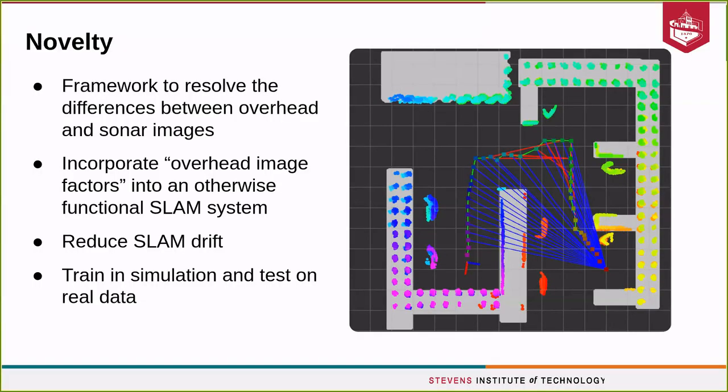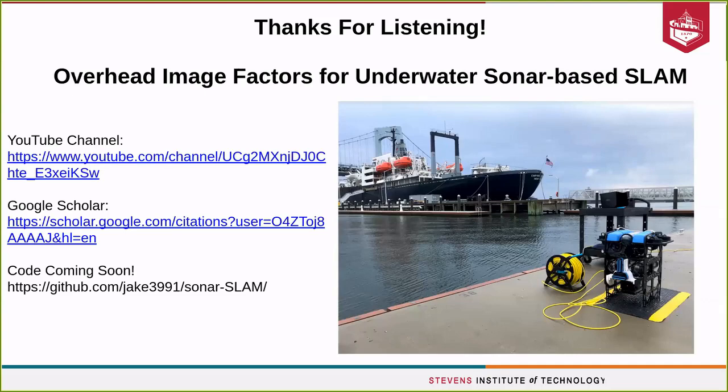To highlight our points of novelty: our framework resolves the differences between overhead and sonar images, and incorporates the overhead image factor into an otherwise functional SLAM system, reducing the SLAM drift. We're also able to show that we can train in simulation and function on real data. Thanks for listening. This has been Overhead Image Factors for Underwater Sonar-Based SLAM.